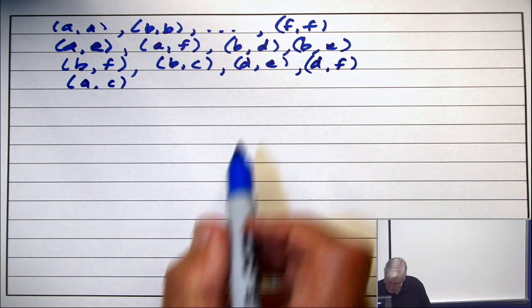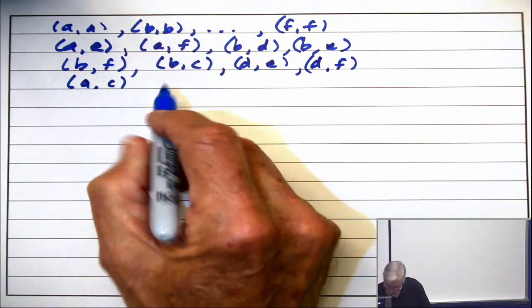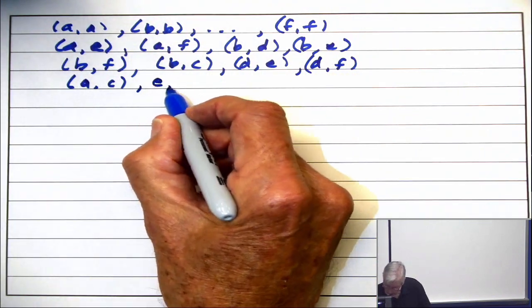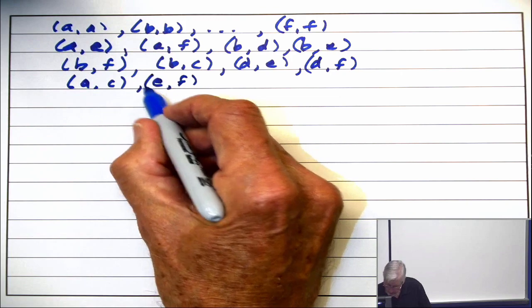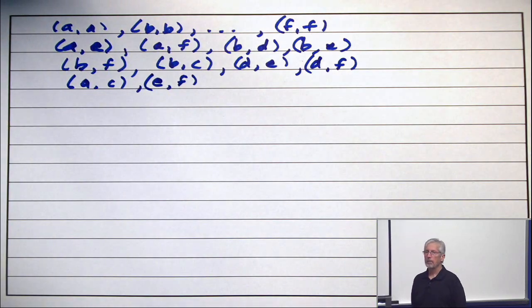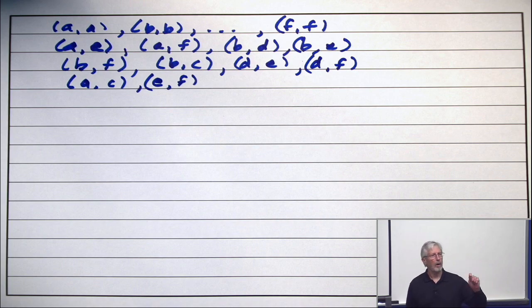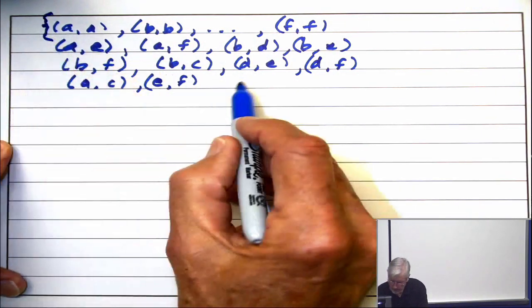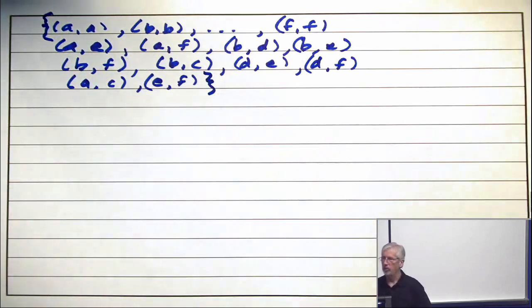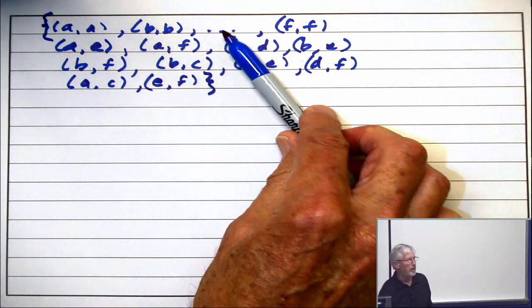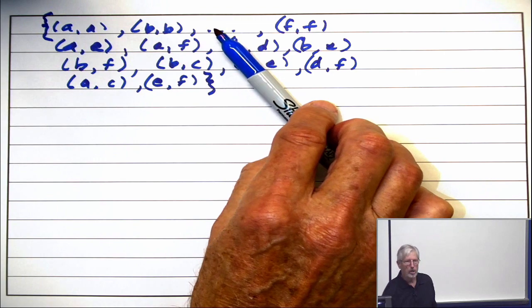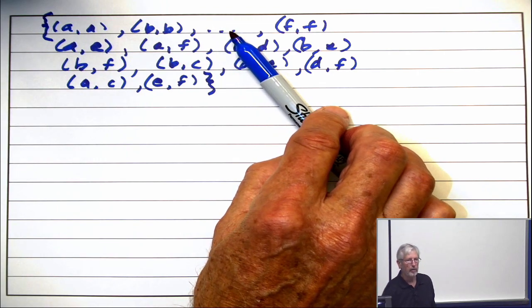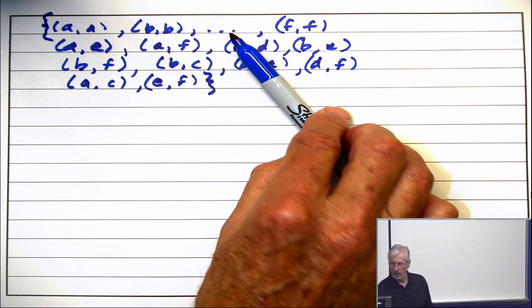Anything else? E comma F. Did I not have it? No, I don't. E comma F. Now do I have them all? I think so. I'm not 100% certain. And if I am being complete, I should do that. And is everybody with me? I didn't write the C comma C, the D comma D, and the E comma E here. Okay.